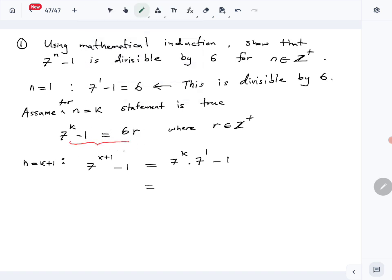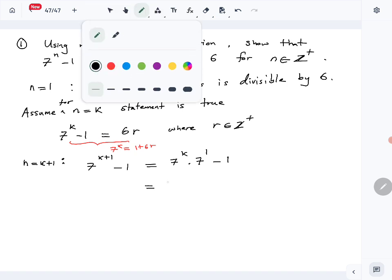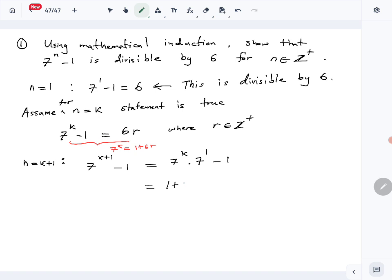So we will do that here. Replace 7^k by 1 + 6r times 7 minus 1. Now simplify. Get rid of the brackets, you get 7.